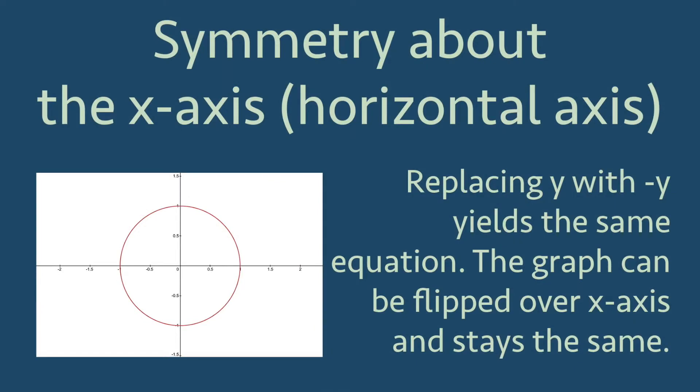First, symmetry about the x-axis, or horizontal axis. When considering equations from elementary algebra, the equation for a graph is said to be symmetric about the x-axis if replacing y with negative y yields the same equation. Visually, if we flip the graph over the horizontal axis and it stays the same, then it is symmetric about the x-axis.